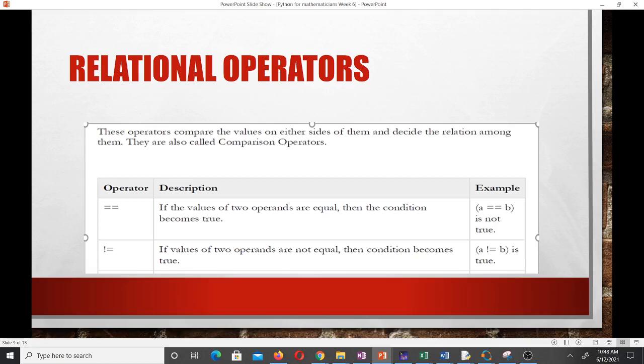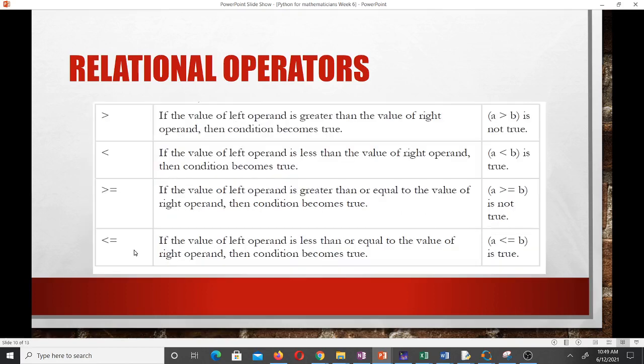Then we have relational operators. Relational operators help us to compare the values on either side of equations and make decisions among them. We call them comparison operators as well. The first one is equal to, or equality, with the double equal symbol. Not equal to uses exclamation and equal. You can have greater than, less than, greater than or equal to, and less than or equal to.